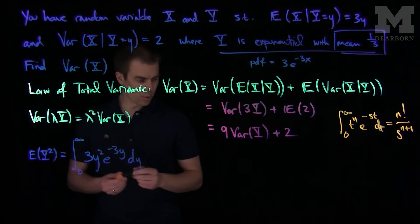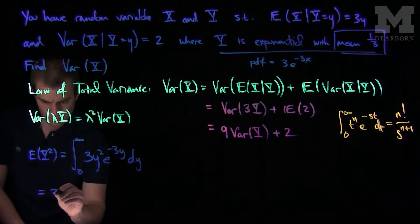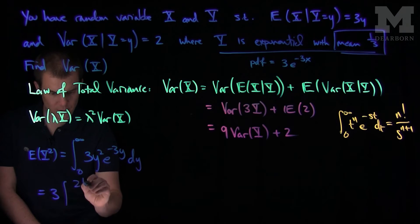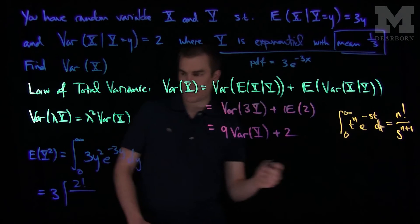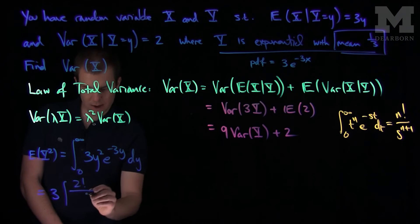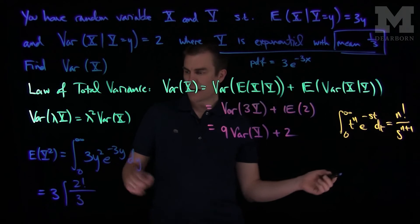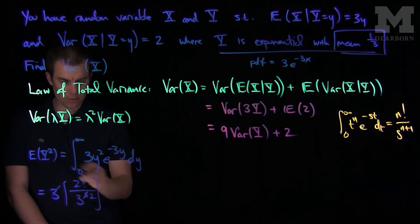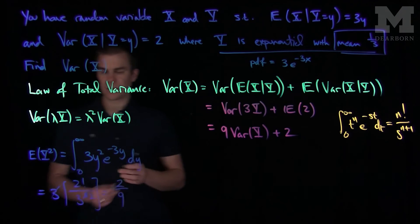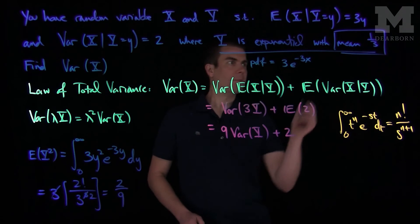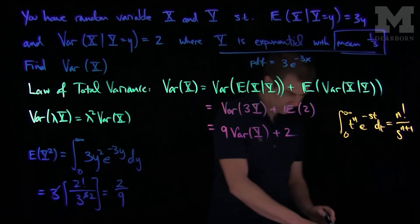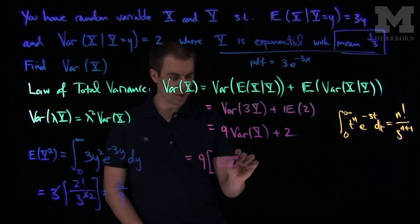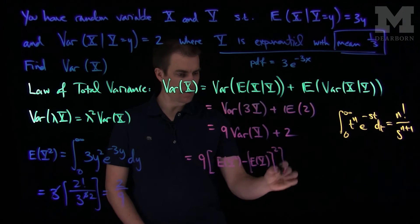So we're going to use this rule. We have a 3 out front, the power n is 2, and s is 3. So n equals 2, giving us 2 factorial on top, and then on the bottom, since n is 2, we have s to the n+1, which is 3 to the power 3. This 3 out front cancels with one factor of 3 in the denominator, turning it into a 2. So the second moment of y is 2 over 9.